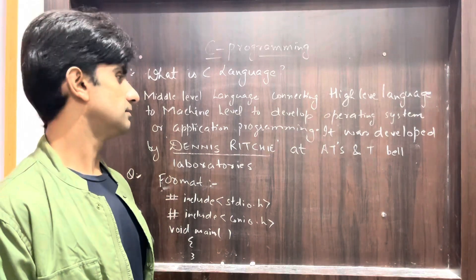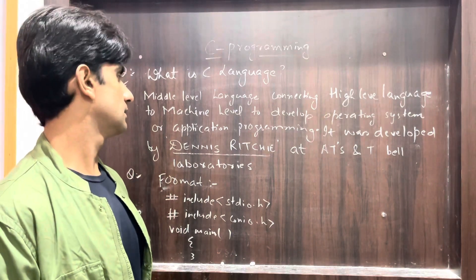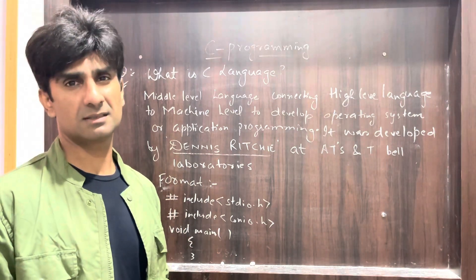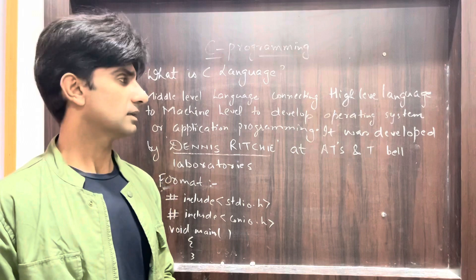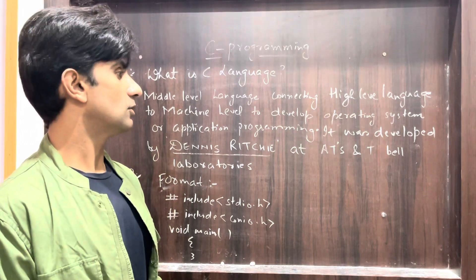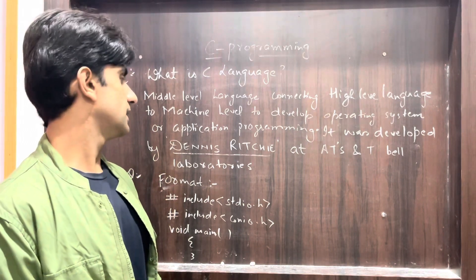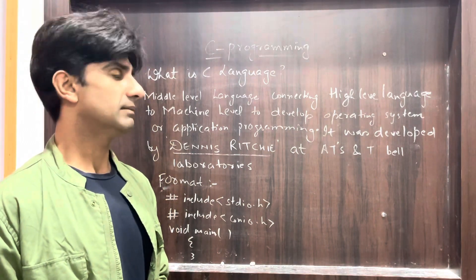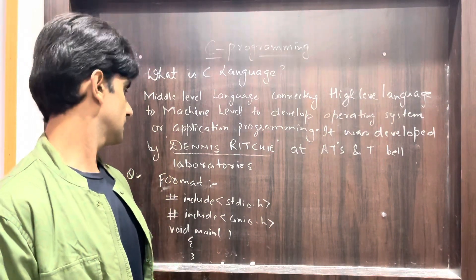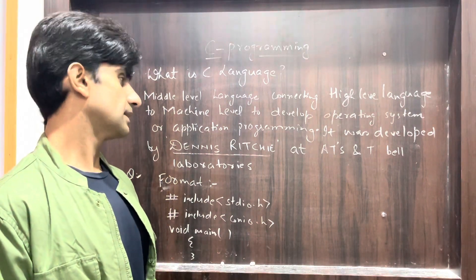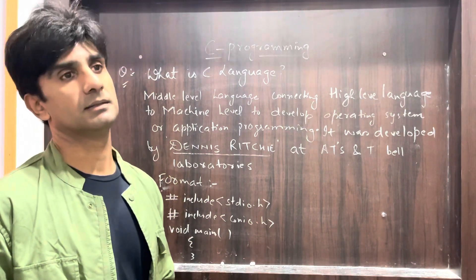C is basically used to create certain operating systems, and programming applications like a billing system. It was developed by Dennis Ritchie at Bell Laboratories.